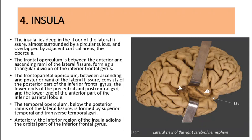The anterior ascending rami of the lateral fissure forms a triangular division of the inferior frontal gyrus. After this is the frontoparietal operculum, which is between the ascending and the posterior rami of the lateral fissure. It consists of the posterior part of the inferior frontal gyrus, the lower ends of the precentral and postcentral gyri, and the lower end of the anterior part of the inferior parietal lobule.